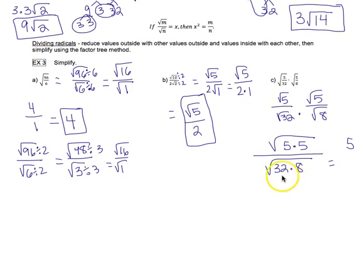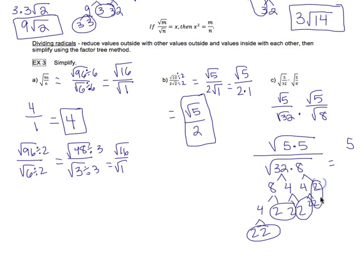Now, on the bottom here, I can break down 32. 32 is 8 times 4. This is 4 times 2. 2 times 2. 2 times 2. 4 times 2. And 2 times 2. So I've got lots of 2s. Everything on the end of the branch is a 2. So I'm going to find the pairs. 1, 2, 3, and 4.